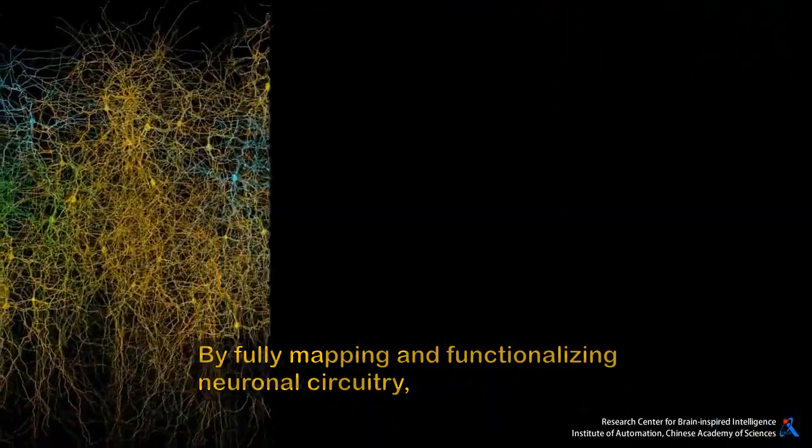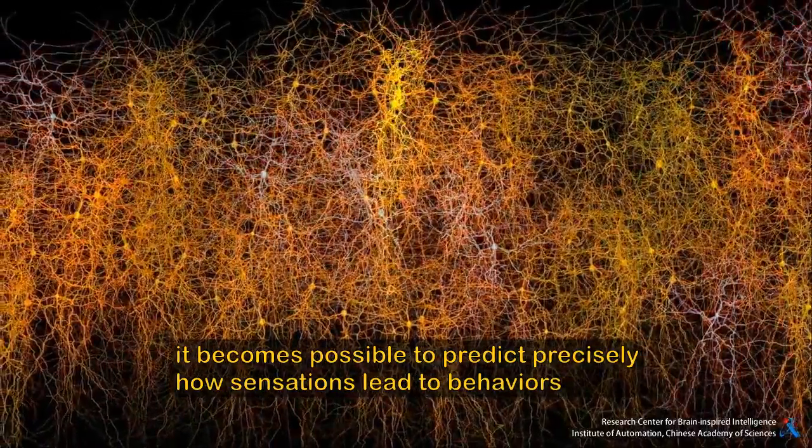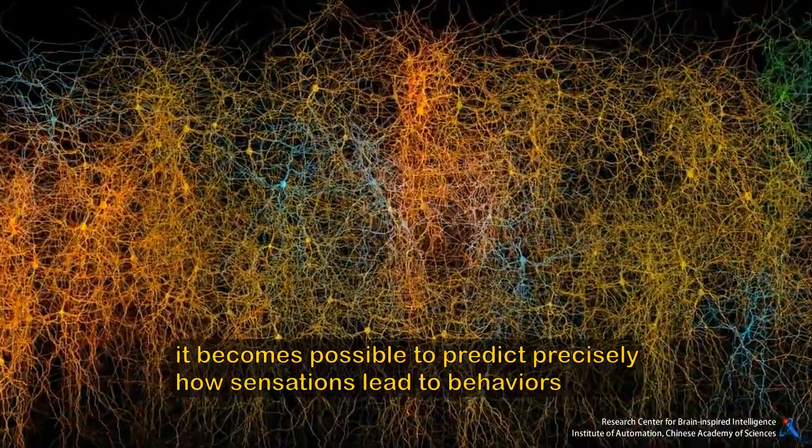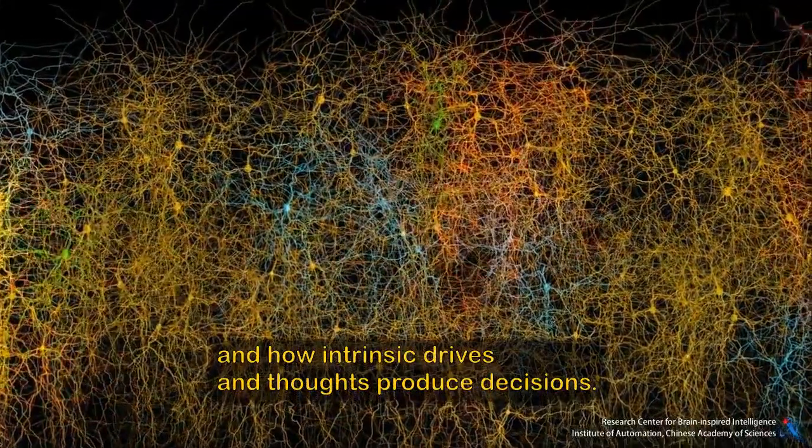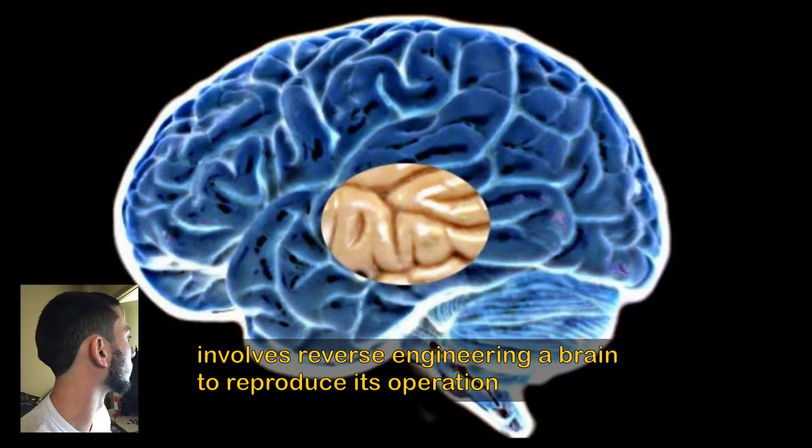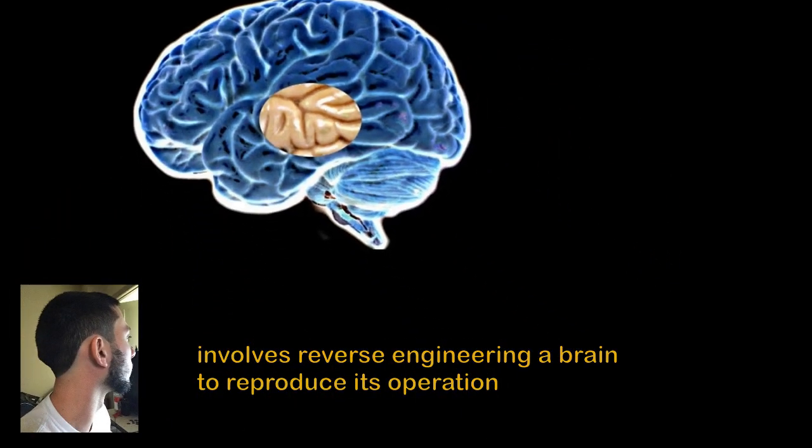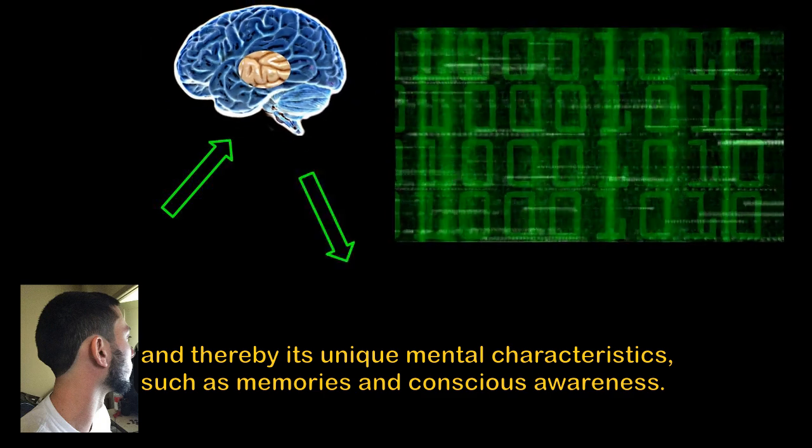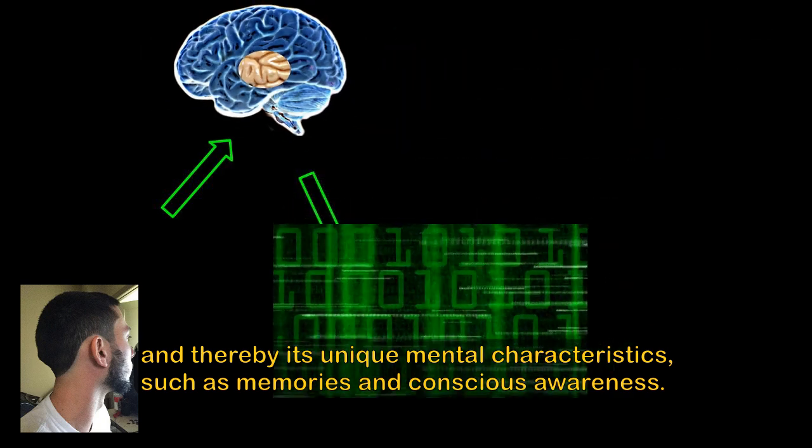By fully mapping and functionalizing neuronal circuitry, it becomes possible to predict precisely how sensations lead to behaviors and how intrinsic drives and thoughts produce decisions. The ultimate outcome, known as brain emulation, involves reverse-engineering a brain to reproduce its operation and thereby its unique mental characteristics, such as memories and conscious awareness.